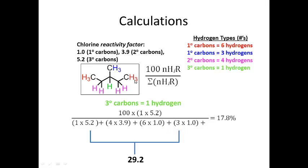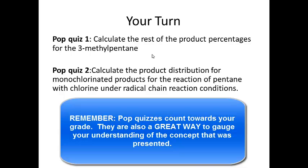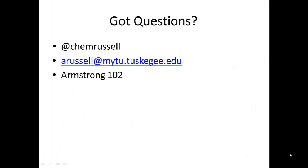The two sets of primary hydrogens correspond to separate terms in the denominator sum. Once you calculate the denominator once, keep it the same and just change the numerator — updating the reactivity factor and hydrogen count — for each subsequent product percentage. For homework, calculate the remaining product percentages from 3-methylpentane, and also calculate the product distribution for monochlorinated products from the reaction of pentane with chlorine under radical chain reaction conditions. These are due on the day of the exam. If you have questions, email or drop by my office.